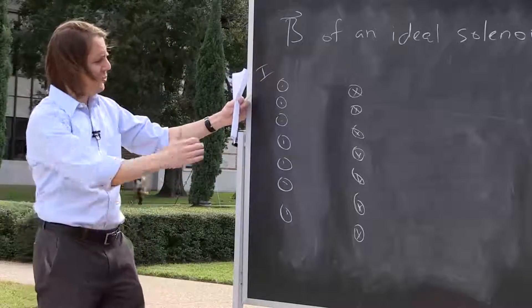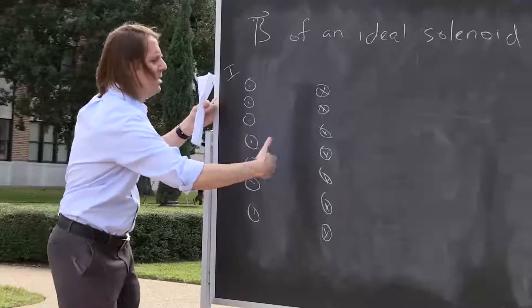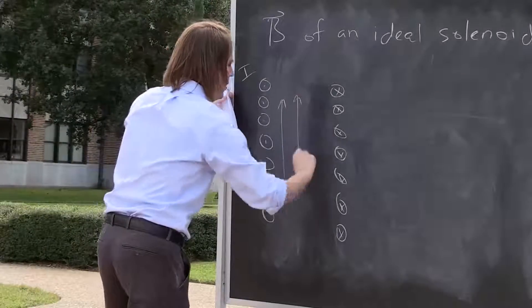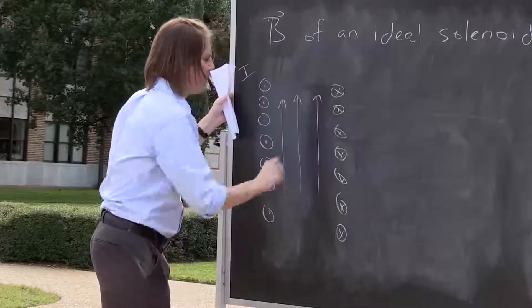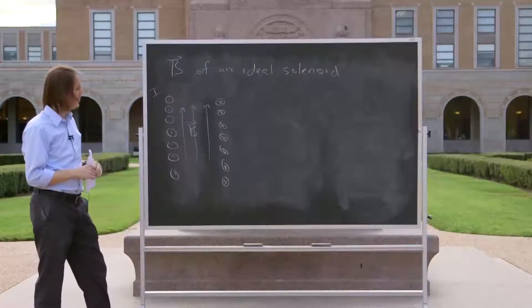The magnetic field inside we can get from the right-hand rule. We've added a bunch of current loops - if they come out here and go in there, it's up. So what you get is a fairly uniform field up on the inside. We'll calculate the magnitude of the field in a minute.